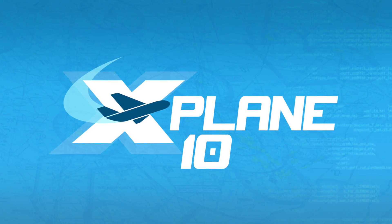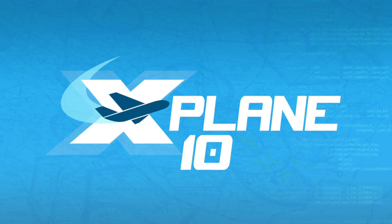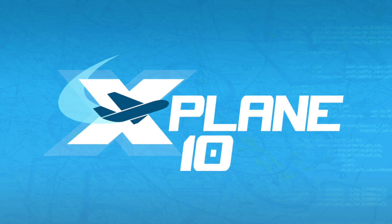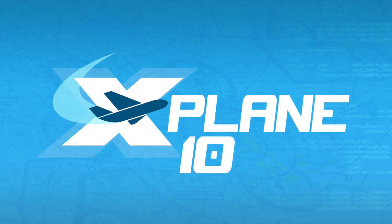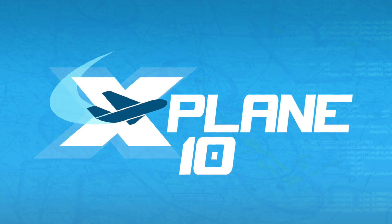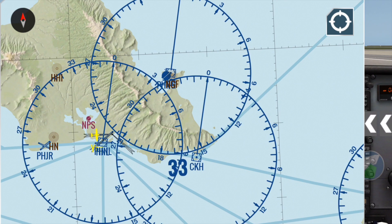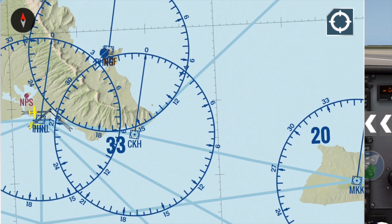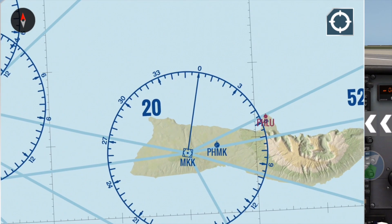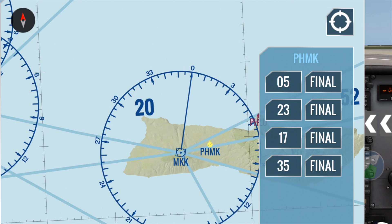Jennifer Roberts here with an X-Plane 10 Mobile tutorial. Today we'll take a look at setting up a short flight plan and approach in the free Cessna 172. I've started a flight with the C-172 in the Honolulu area, and I'm going to set up a direct flight to Molokai.